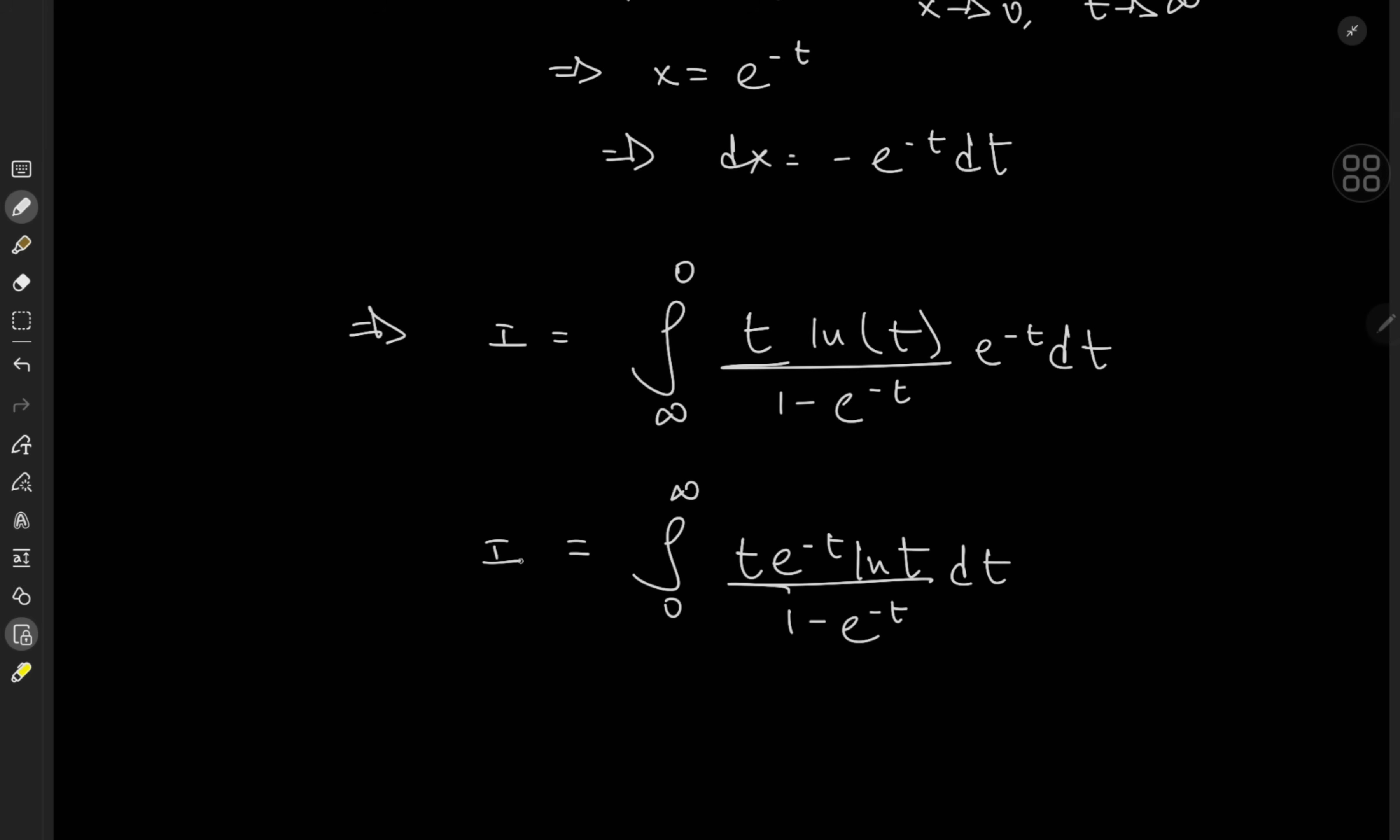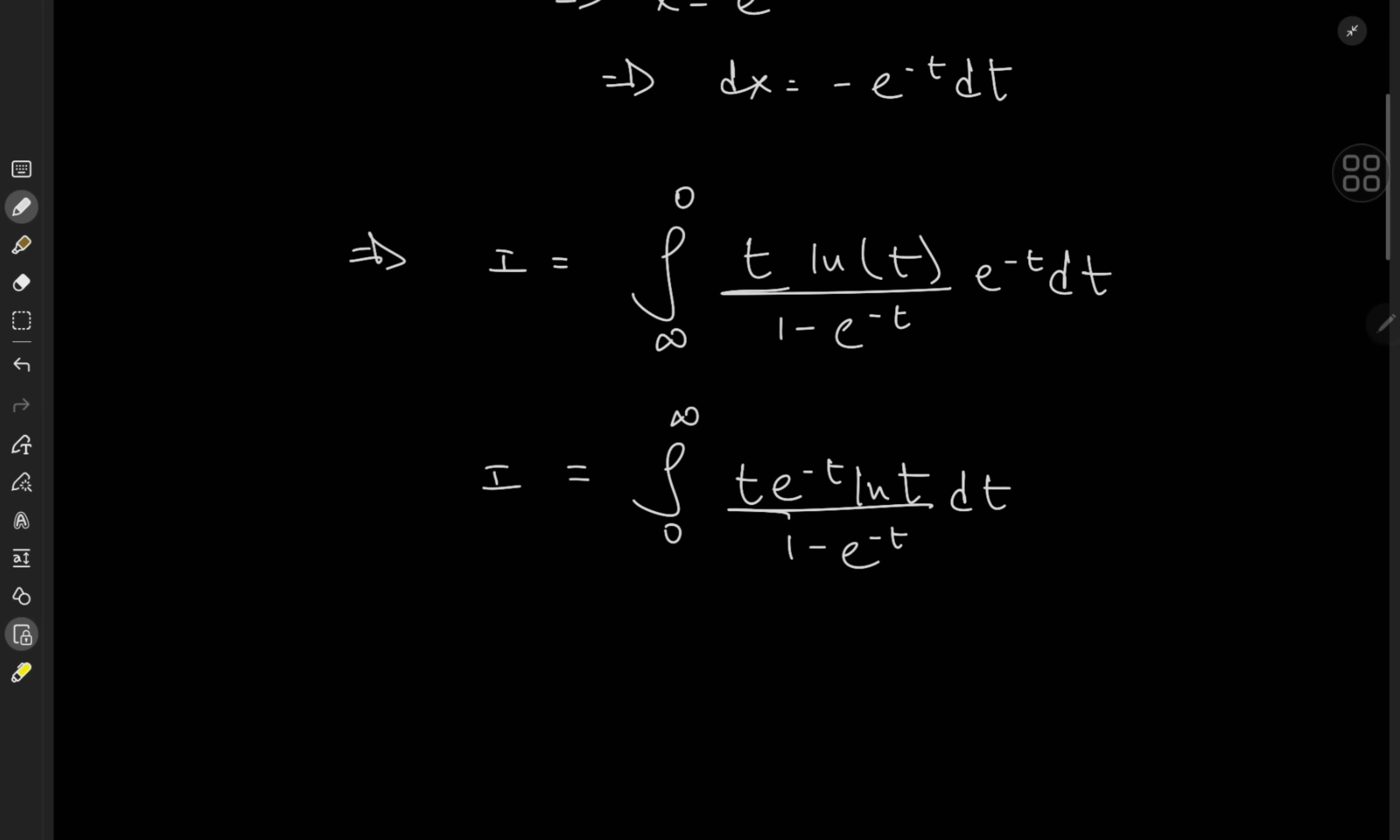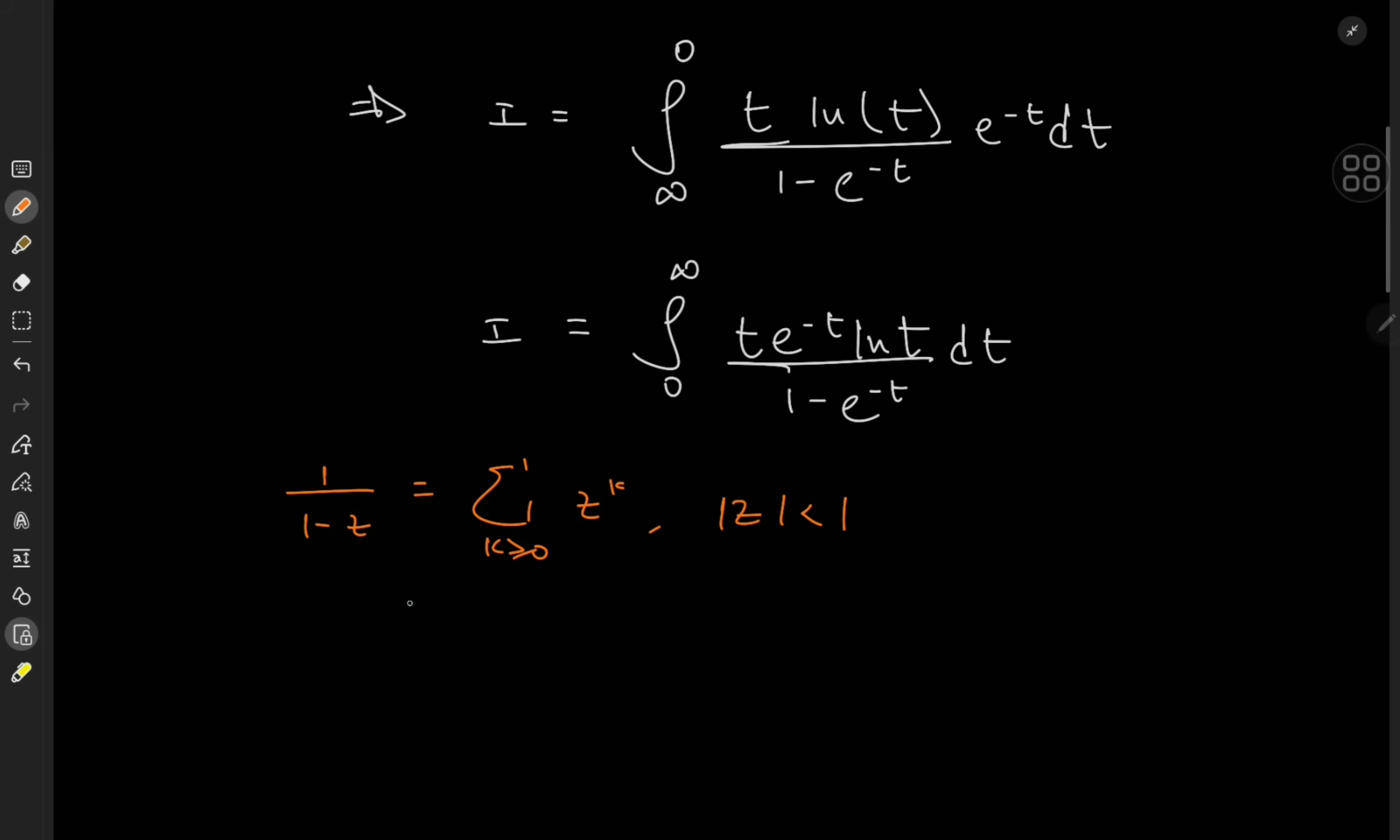And this here looks like an integral on which I can invoke one of my favorite tricks, and that is the geometric series. So recall that 1 over 1 minus z can be expanded as the sum over k from 0 to infinity of z to the k, provided the absolute value of z is less than 1. And this is fairly valid for z equal to e to the minus t on our interval of integration. So this implies that 1 over 1 minus e to the negative t equals the sum over k of e to the minus tk.